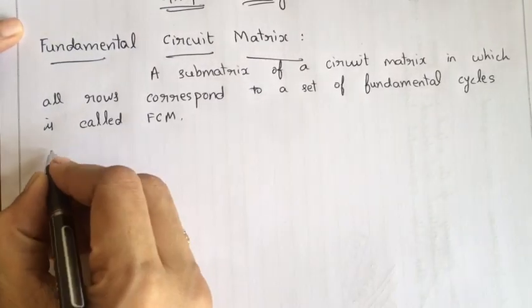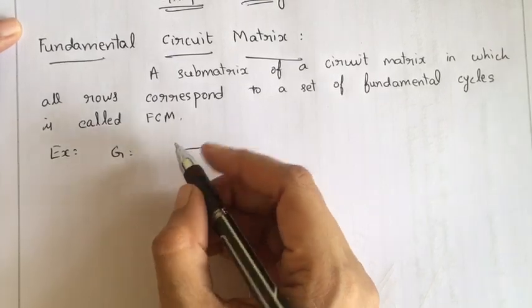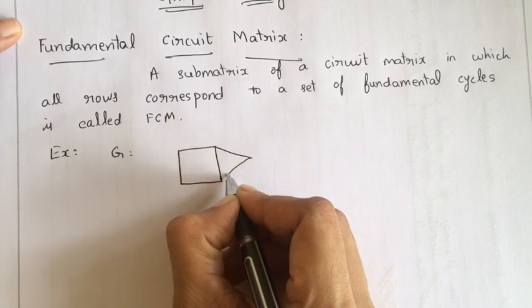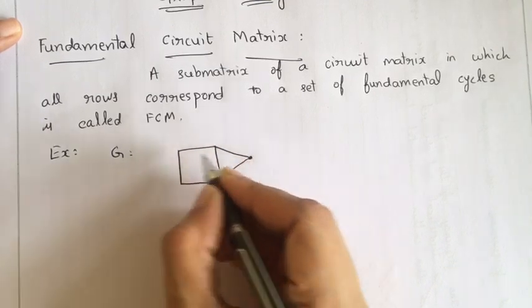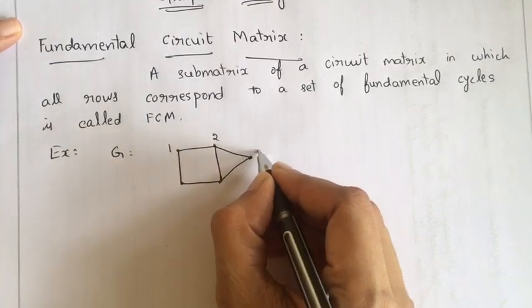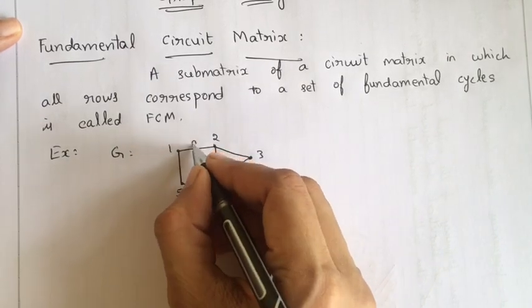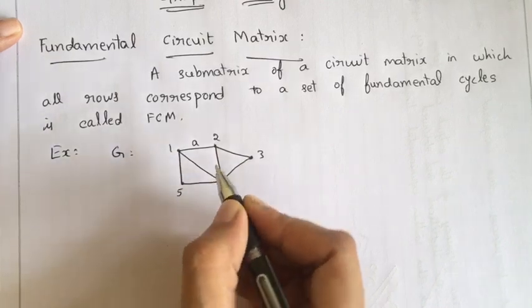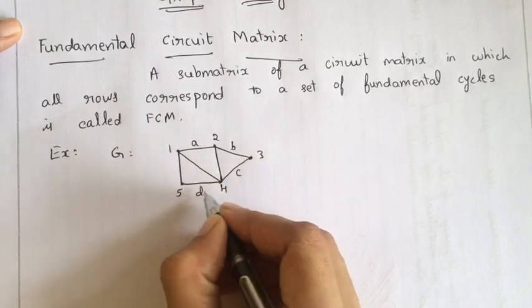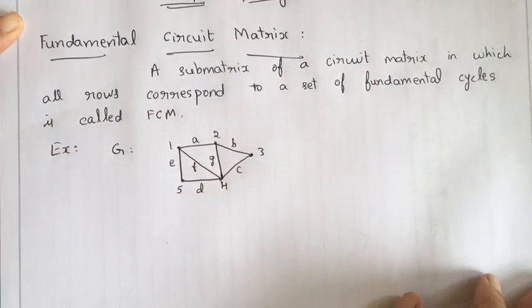For example, consider a graph G which has five vertices. The vertices and edges are named as follows: edges A, B, C, D, E, F, G.